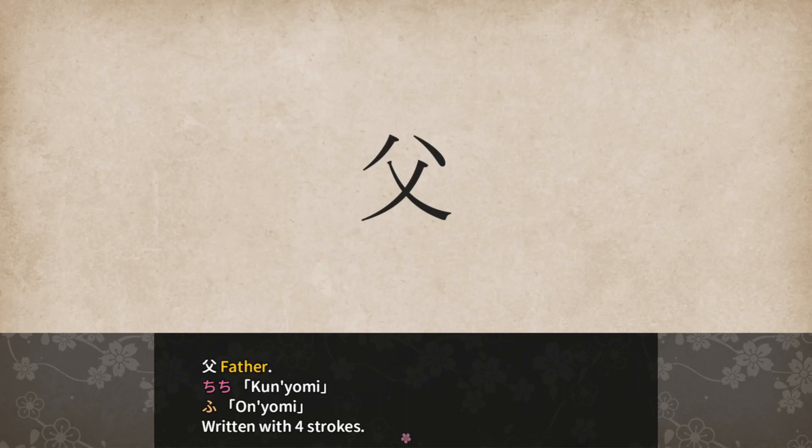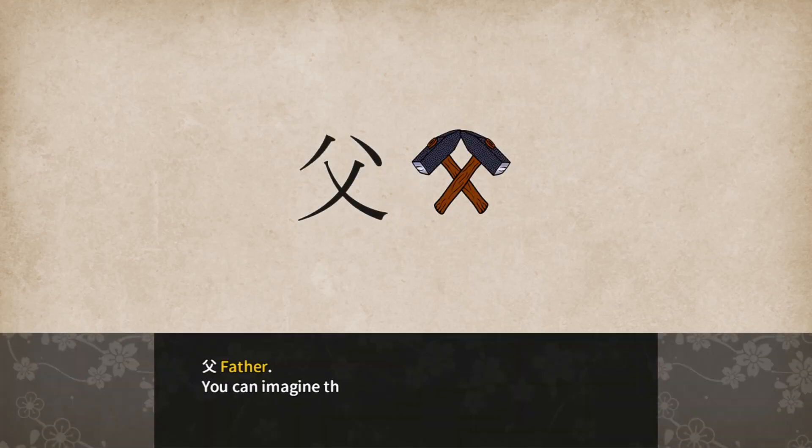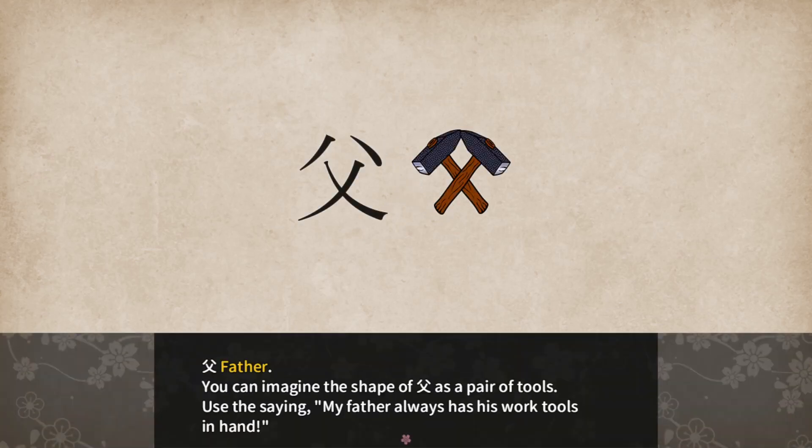Father: Chichi for Kunyomi and Fu for Onyomi. Written with 4 strokes. You can imagine the shape of Chichi as a pair of tools. Use the saying: my father always has his work tools in hand.